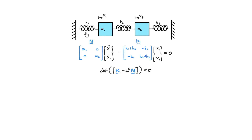Now to see how this works, let's put a value for each mass and spring element in the system. Let's put M1 as one kilogram, M2 as two kilograms, K1 as one newton per meter, K2 as two newtons per meter, and K3 also as two newtons per meter.